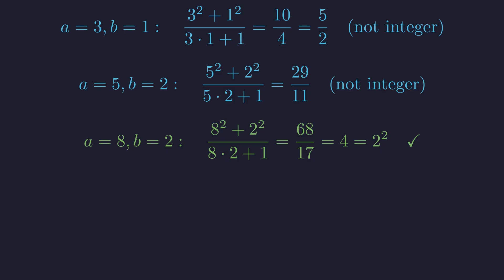Notice the pattern. When we do get integers, they seem to be perfect squares. This consistent pattern suggests our theorem might be true. But we need rigorous proof, not just examples.